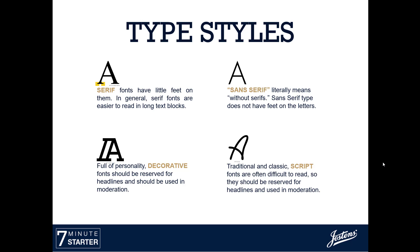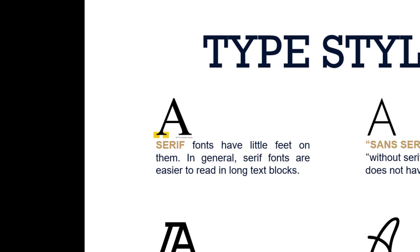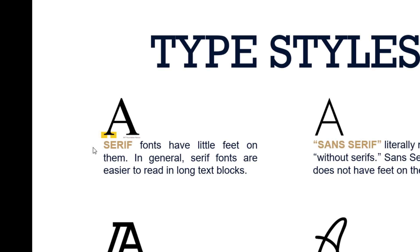She went through a lot of different types of type really fast. I want to break down the most specific ones that we'll talk about and use in your book. So the first one is serif. Serif fonts have the little feet that are highlighted here in yellow. In general, serif fonts are easier to read in long text blocks.